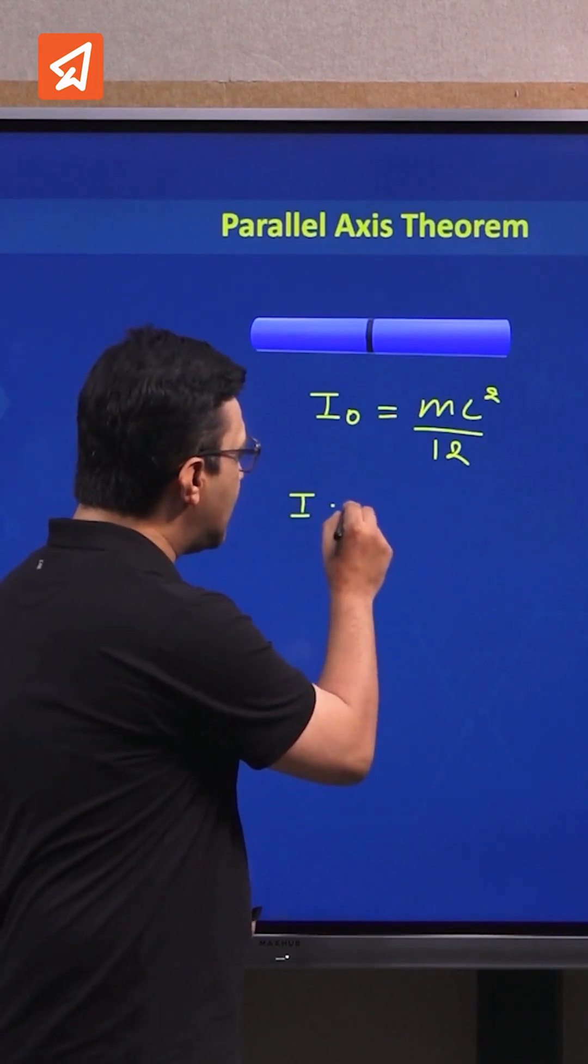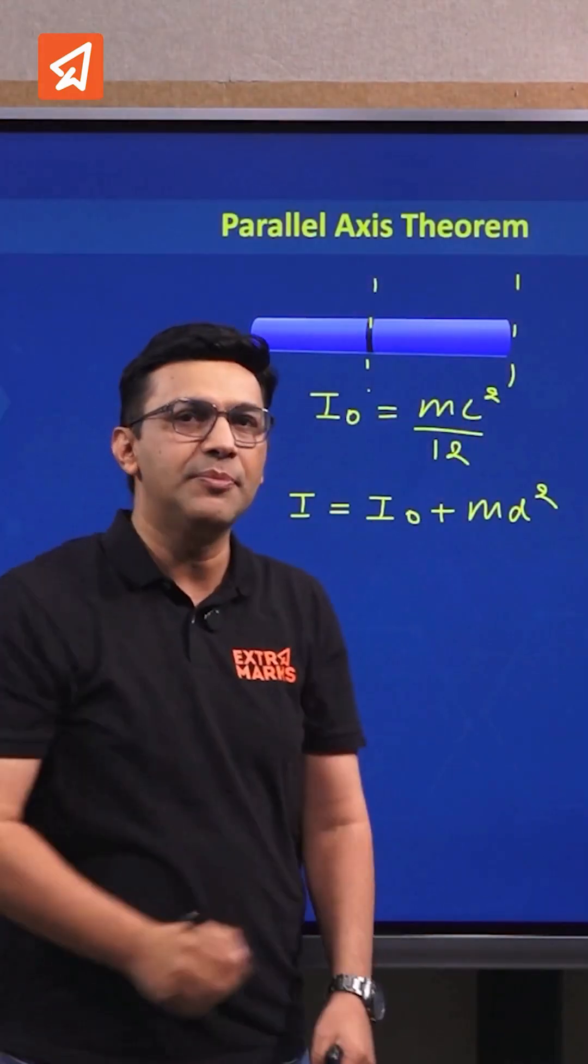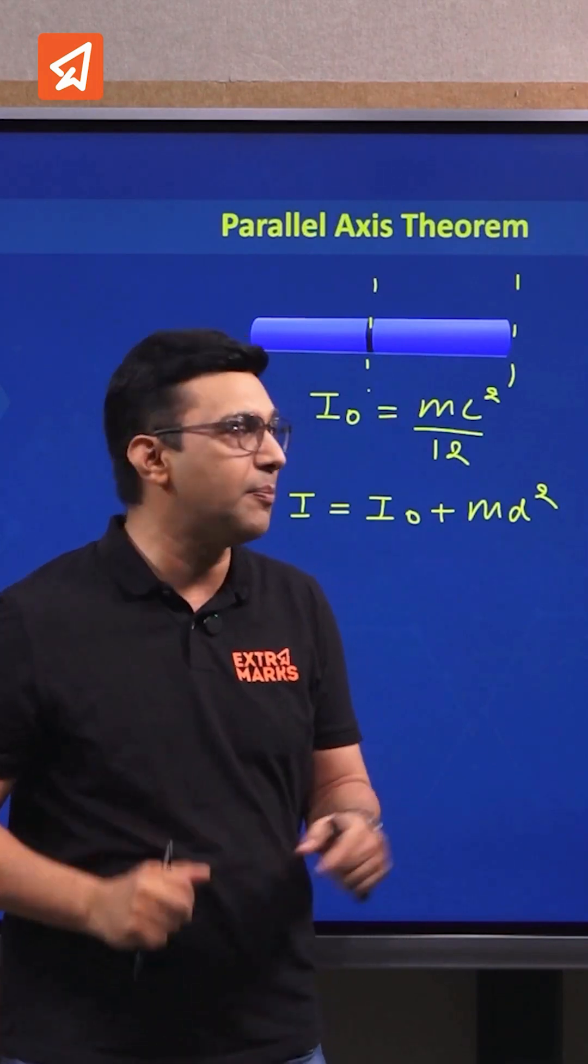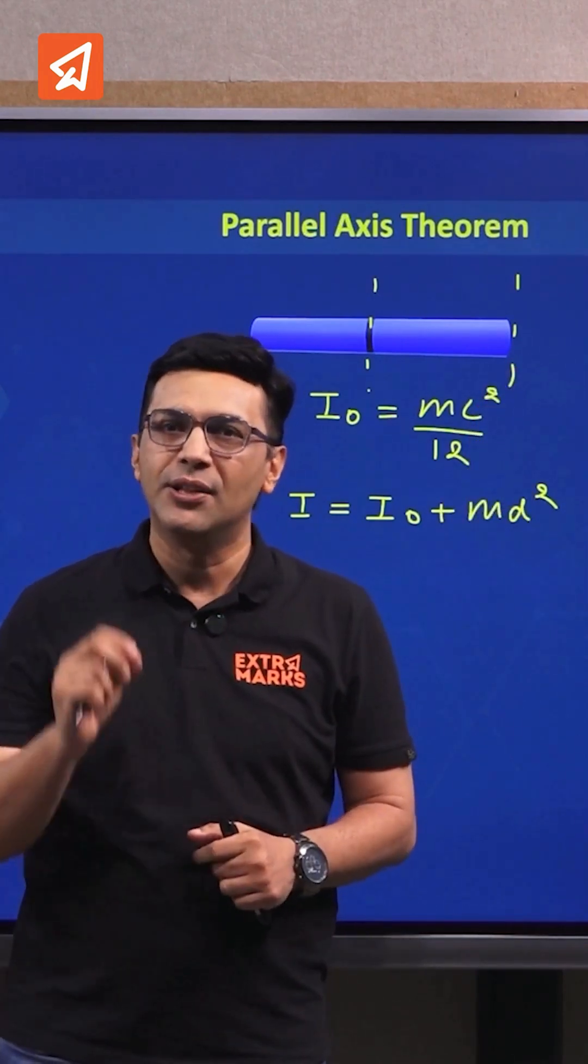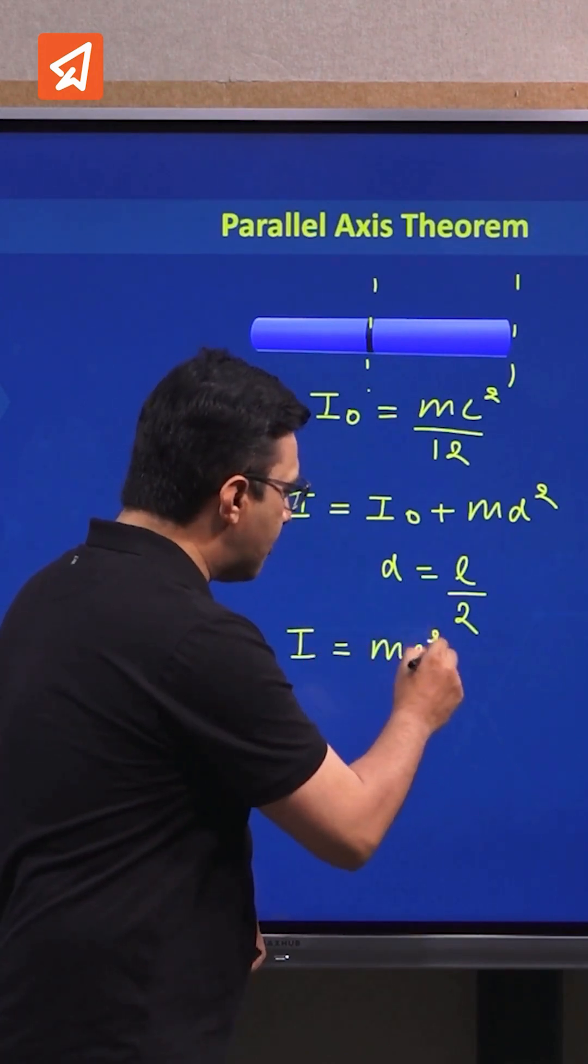For that, we have to apply the theorem of parallel axis, which is I = I₀ + mD². Suppose we take the second axis here, that is basically passing through one of the corners of the rod. If we take the value of D as L/2, we will get the value of I as mL²/3.